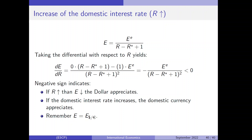So if the domestic interest rate increases, the domestic currency will appreciate. We have to be a little careful here because in the textbook version the domestic country is the U.S. — so when the U.S. increases the interest rate, the exchange rate decreases, which is an appreciation of the dollar. Please remember that in this model, the exchange rate is determined as the amount of dollars per one euro. Thank you very much for watching. We are now done completely with chapter 14. Have a nice day, bye bye.